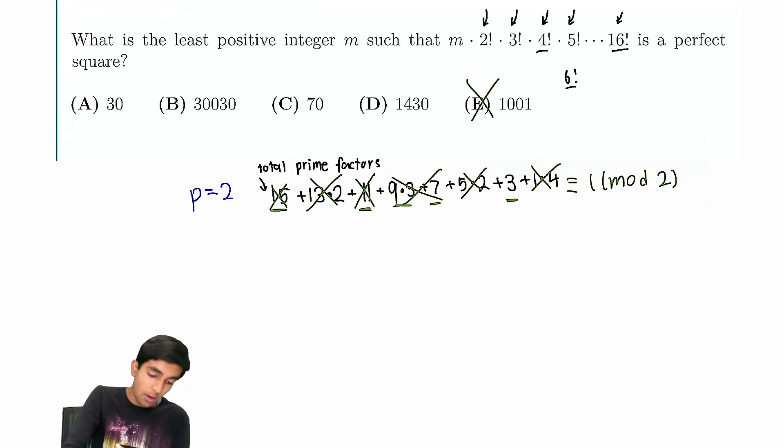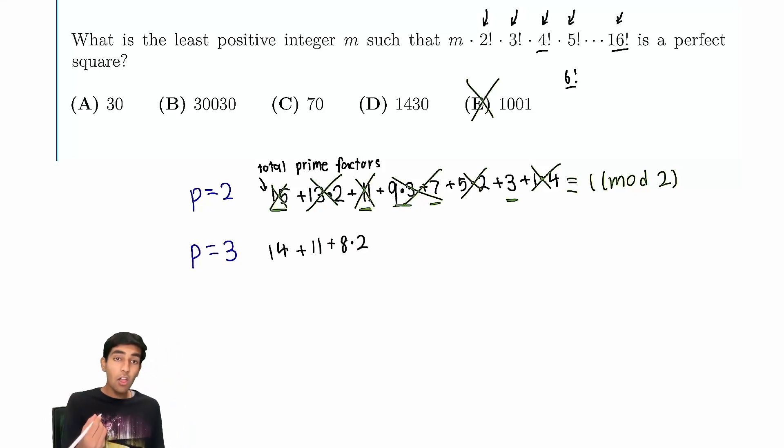Great. Now, we just continue this logic, but now we do for 3. And I'm going to go through this one a little bit faster, but it's the exact same idea. From 3 to 16, we have 14 factorials, so 14. From 6 to 16, we have 11, so an additional 11. From 9 to 16, we have 8, but 9 has two factors of 3, so we have an additional 8 times 2 factors of 3. Now 12, 12 has just one factor of 3, so 12 to 16. There's five numbers with an additional factor of 3.